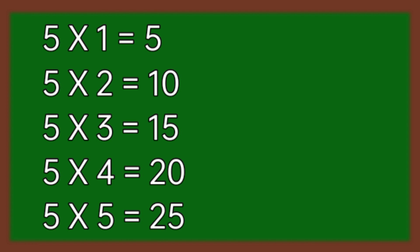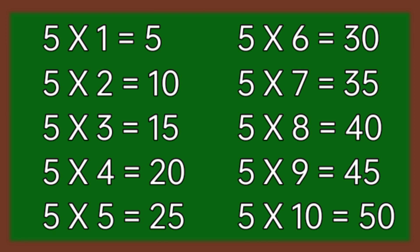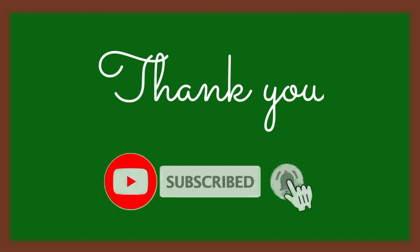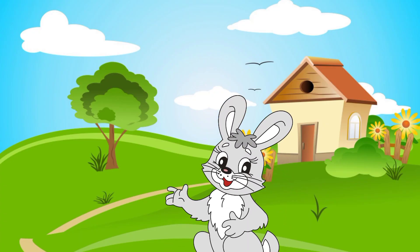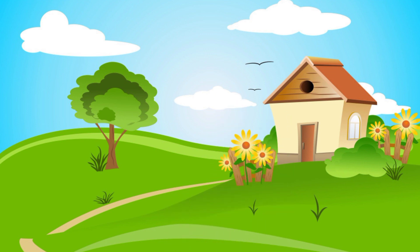5 ones are 5. 5 twos are 10. 5 threes are 15. 5 fours are 20. 5 fives are 25. 5 sixes are 30. 5 sevens are 35. 5 eights are 45. 5 nines are 45. 5 tens are 50.